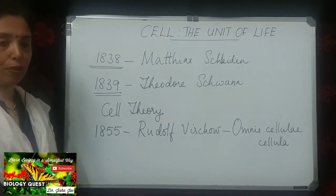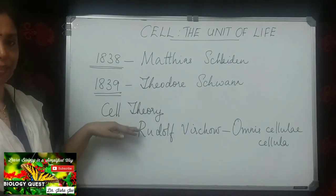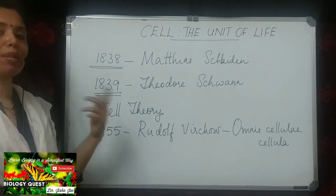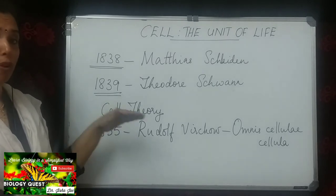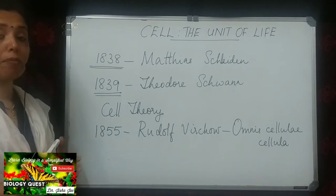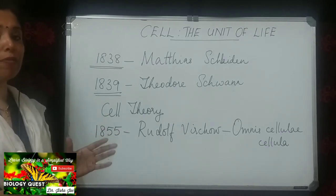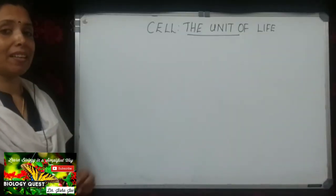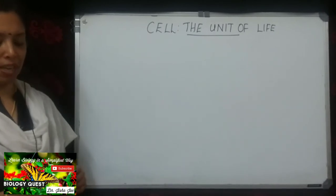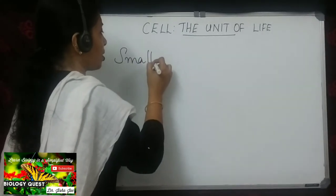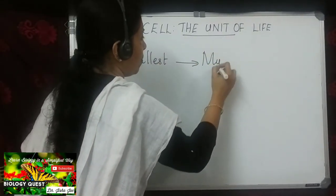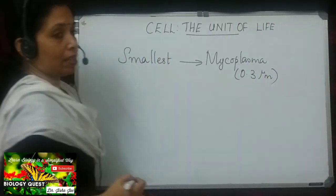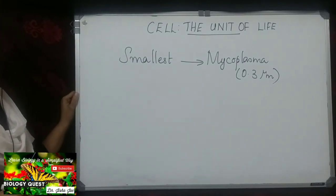So it was Schleiden and Schwann who proposed the cell theory, but in 1855 Rudolf Virchow proposed 'Omnis cellula e cellula,' meaning new cells arise from pre-existing cells, and this was added to the modified cell theory. Cells differ in size, shape, and function. The smallest cell is that of mycoplasma, which is about 0.3 micrometers in length.